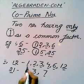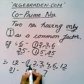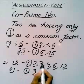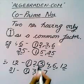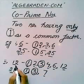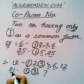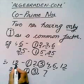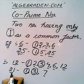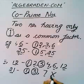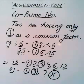Here we see 1 and 3, both are the common factor among these two numbers. So, number 12 and 21 are not co-prime numbers.